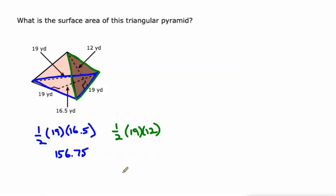0.5 times 19 times 12, that's 114. We've only got the three sides. Is this one the same thing? Yeah, it's 19 by 12 as well, so that one back there is the same thing.